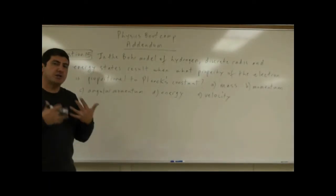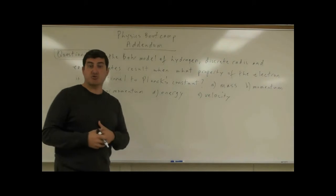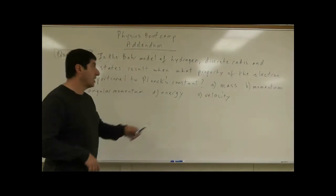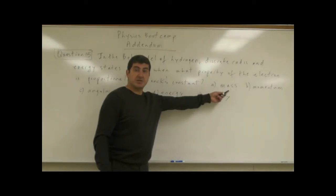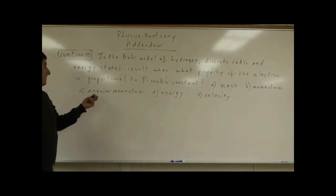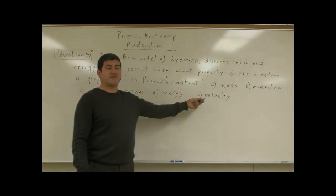What did he do? How did he propose that the energy levels of the electrons are quantized or come in certain discrete levels? Did he say the mass of the electron comes in certain discrete levels? Does the momentum come in certain discrete? Does the angular momentum, does the energy, or does the velocity?